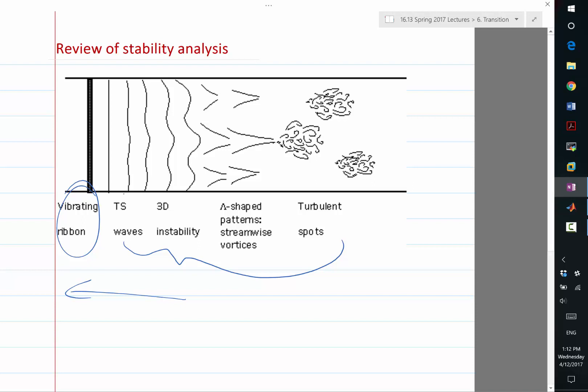Okay, once it grows to enough amplitude, let's say 1% of the free stream, then small disturbances on the boundary or from the free stream are going to trigger the instability and make these waves 3D.